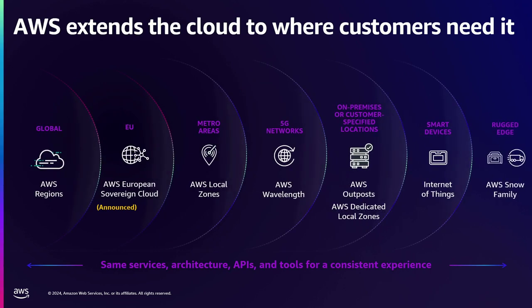AWS provides a wide continuum of solutions to meet varied sovereignty requirements. We spoke about AWS regions and European Sovereign Cloud. There's also AWS Local Zones — bringing infrastructure to your facility — AWS Wavelength tied to 5G networks, Dedicated Local Zones, Internet of Things, and the Snow Family. The idea is that the legwork involved for the customer should be as minimal as possible, and they can choose across these offerings to accelerate their journey to the cloud.